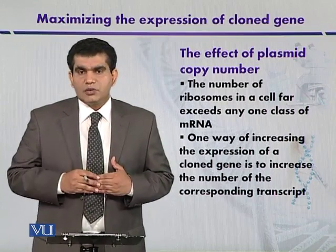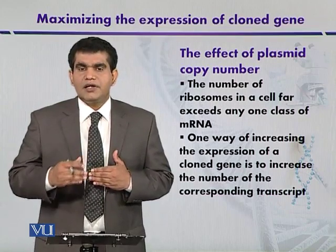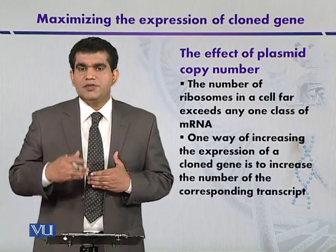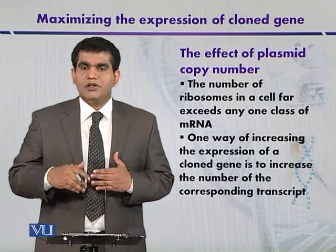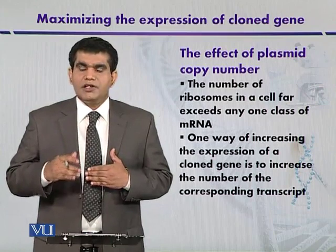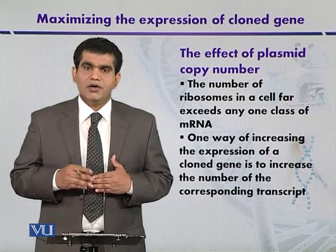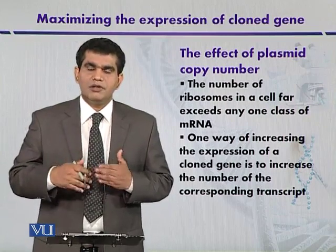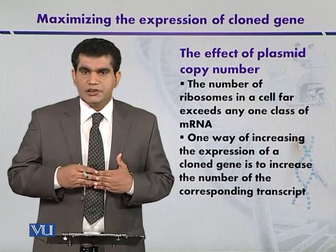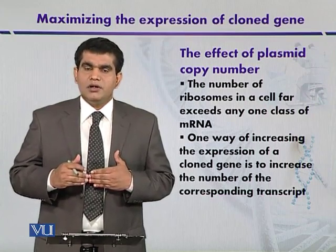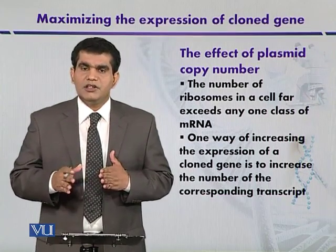How does this control copy number? If RNA2 is available and RNA1 is absent, RNA2 can act as a primer with the origin of replication and start the duplication of the plasmid. On the other hand, if RNA1 is available — being complementary to RNA2 — it changes the conformation of RNA2 so that RNA2 is no longer able to act as a primer with the origin of replication, thus limiting plasmid replication.